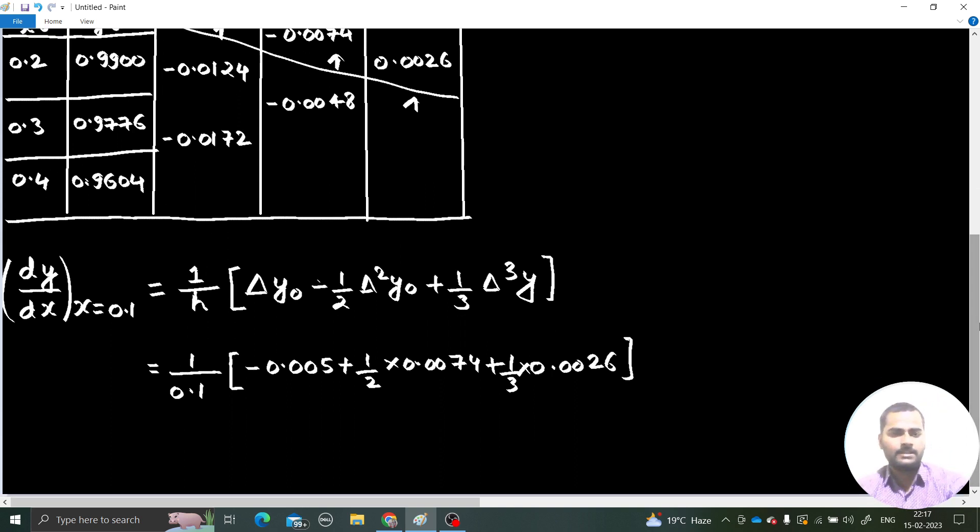And this will be the calculation. Let's do it with the help of calculator. I am first calculating the bracket which is inside. Minus 0.005 plus half times 0.0074. This is equal to this plus 1 by 3 times 0.0026.